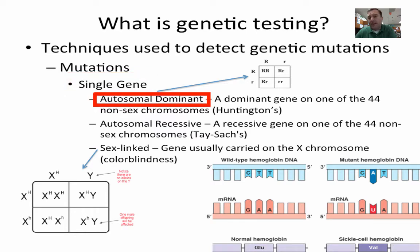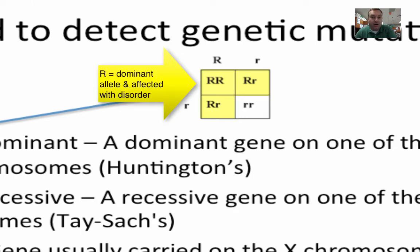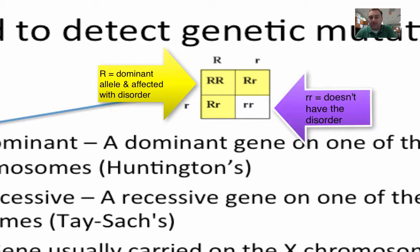In an autosomal dominant disease, you only need to have one allele to have it. Looking at this Punnett square with the R's, any individual who has a big R is going to have the disease. To be non-affected, you need two little R's. In this case, two affected individuals passed it on to 75% of their children.